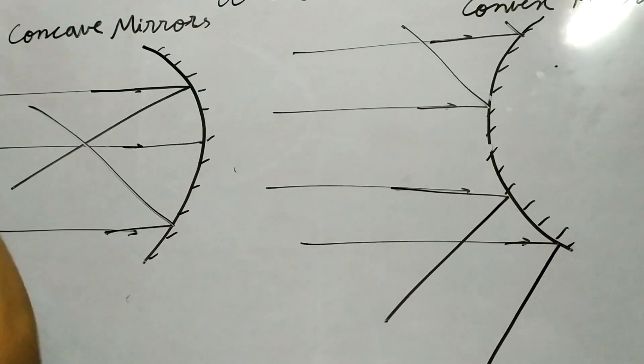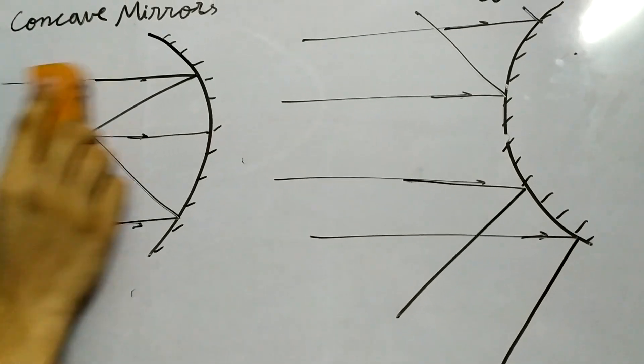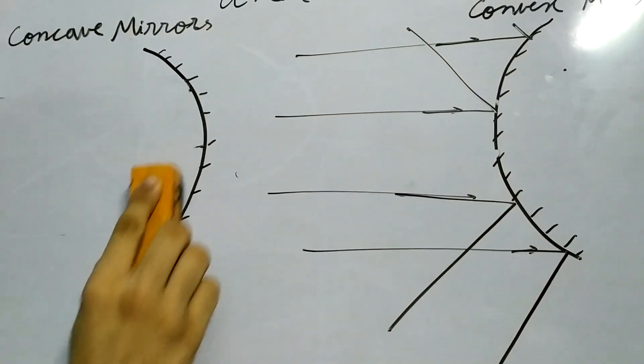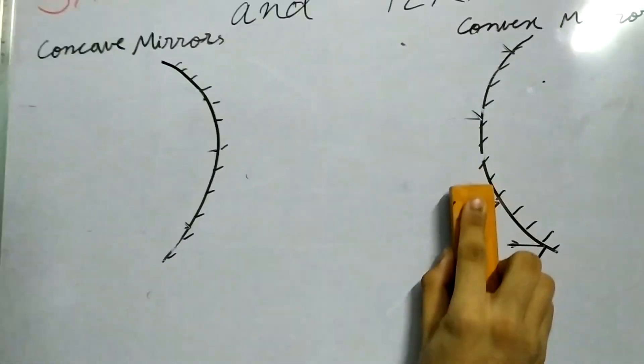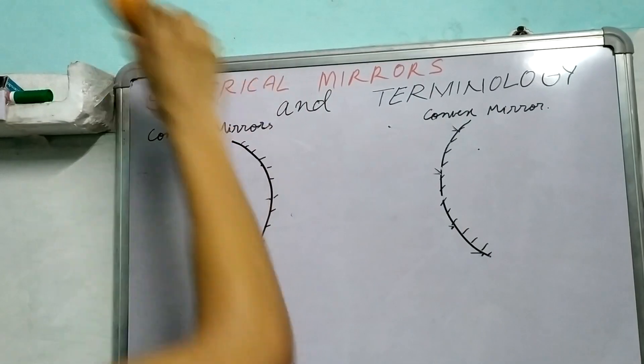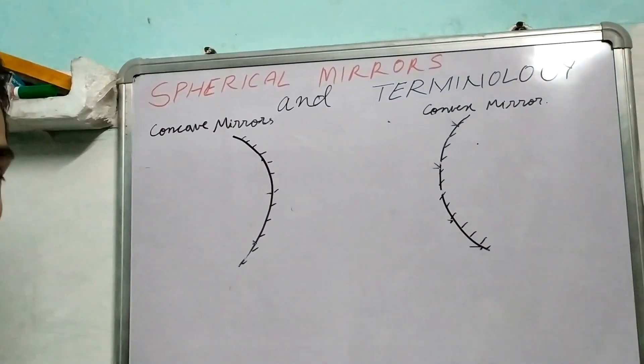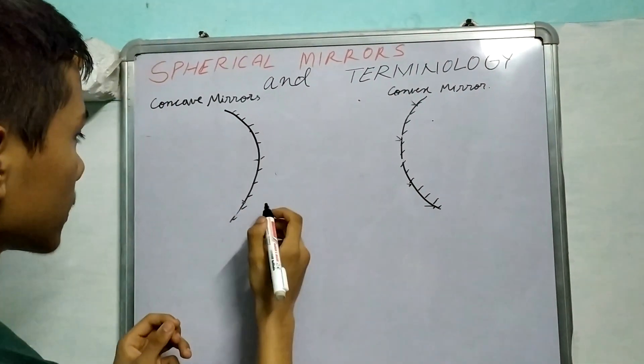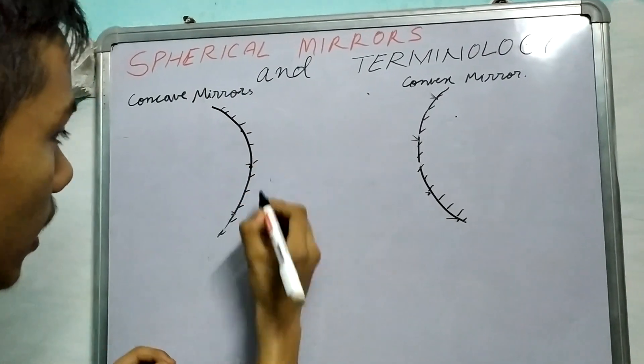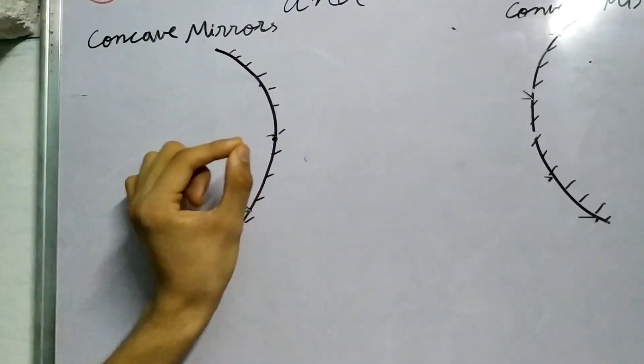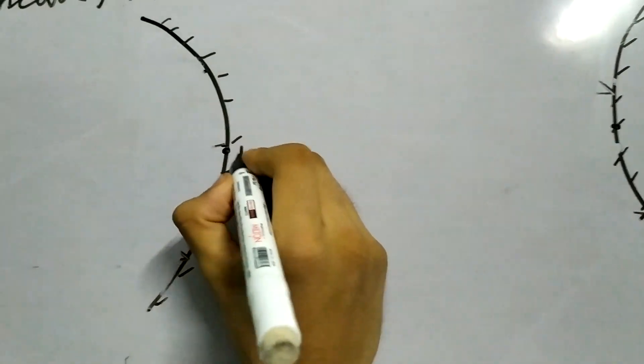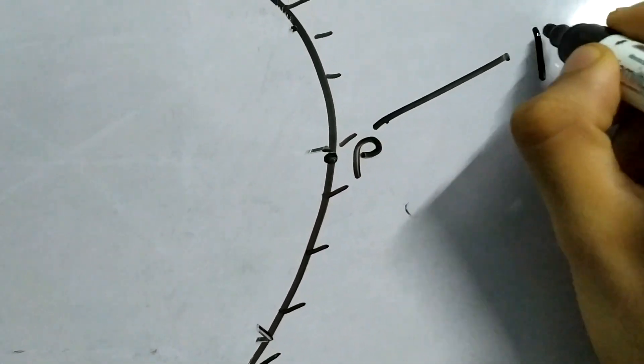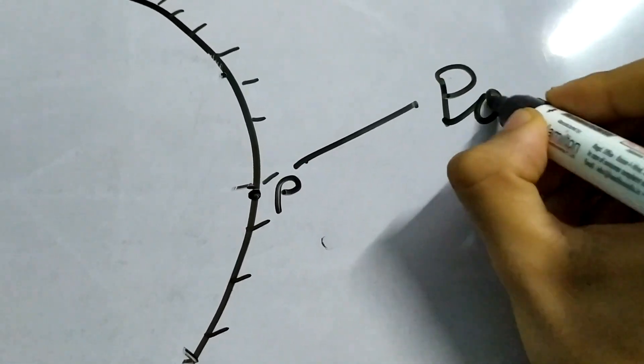Now that we are done defining what concave and convex mirrors are, let us start labeling a few important points and lines for these mirrors. An important point is this one, the point right at the center of this mirror and this one.